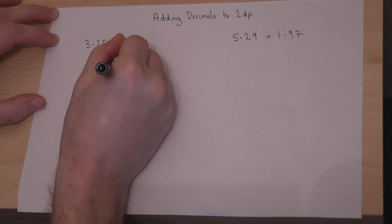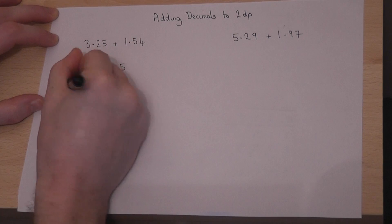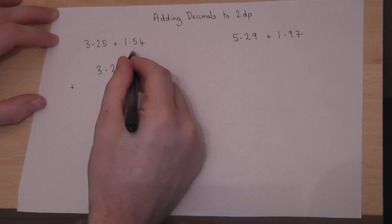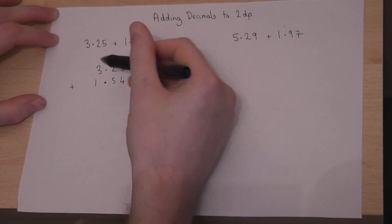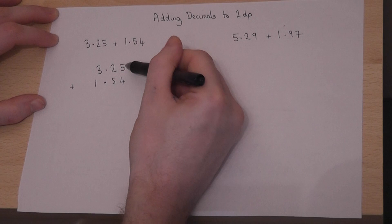So 3.25 and write down the 1.54 below it. So we put the point there, then 1, 5, 4. So the units line up, the tenths and the hundredths.